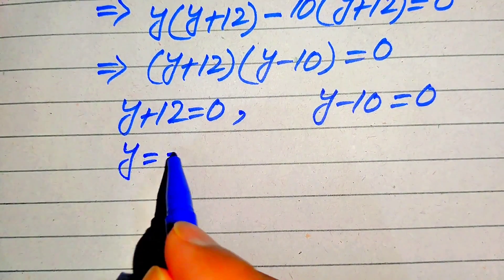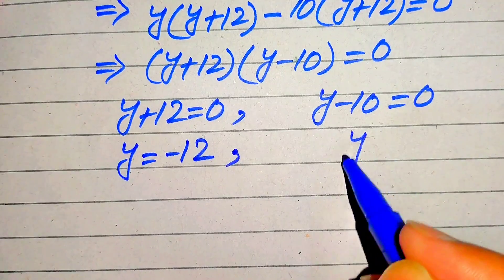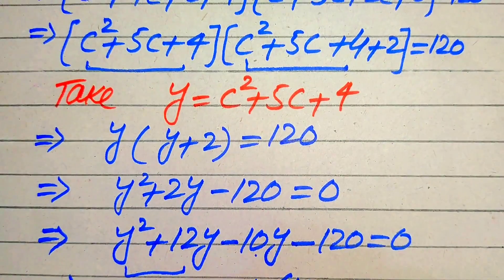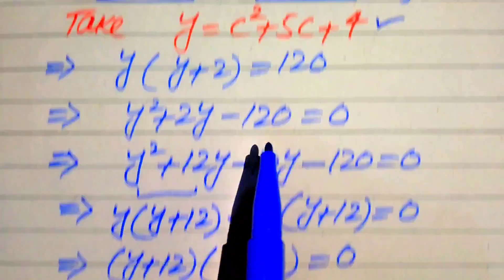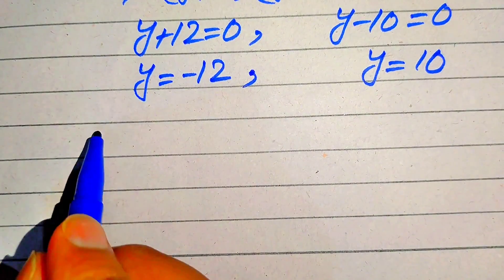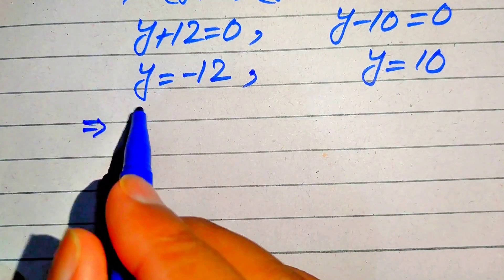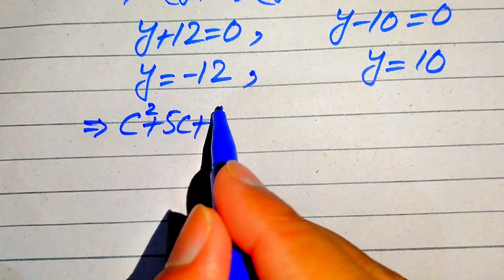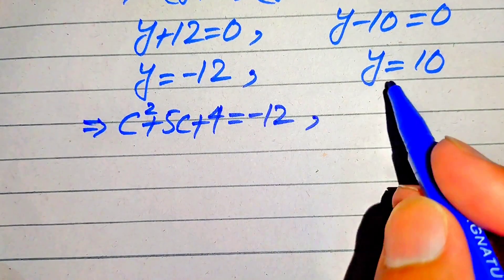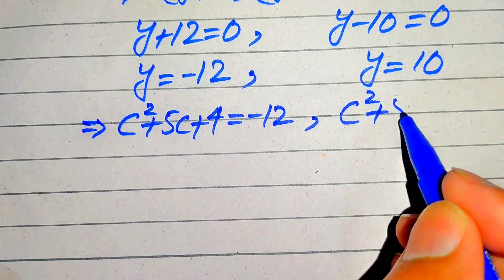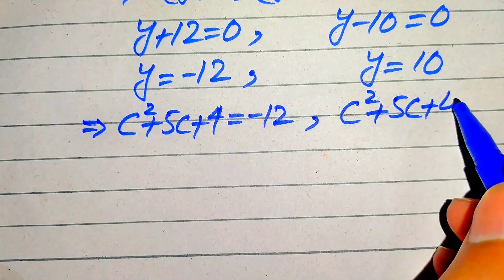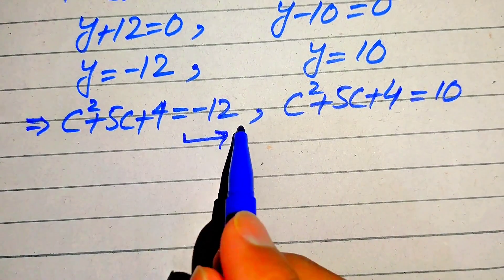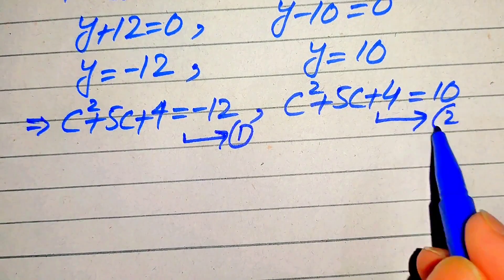From case one, Y = −12, and from case two, Y = 10. We back-substitute using Y = C² + 5C + 4. For Y = −12 we get Equation 1: C² + 5C + 4 = −12, and for Y = 10 we get Equation 2: C² + 5C + 4 = 10.